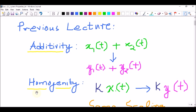Additivity implies that if individual inputs x1 and x2 give rise to outputs y1 and y2 respectively, then their combination x1 plus x2 shall result in the combination y1 plus y2.